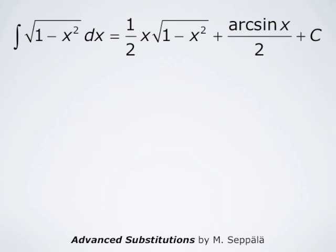By a substitution we got that the integral of square root of 1 minus x squared dx is one half x times square root of 1 minus x squared plus arcsin of x divided by 2, plus the constant of integration C.